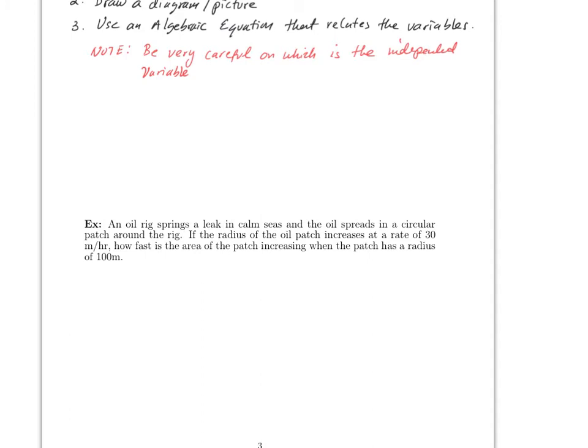Most of these problems depend on time, so the independent variable is usually time — things are changing with respect to time. For example, x itself could be a variable that depends on time. Instead of saying x-prime, we usually write dx/dt. This notation is used a lot in physics. You have to be very careful which variable you are taking the derivative with respect to.